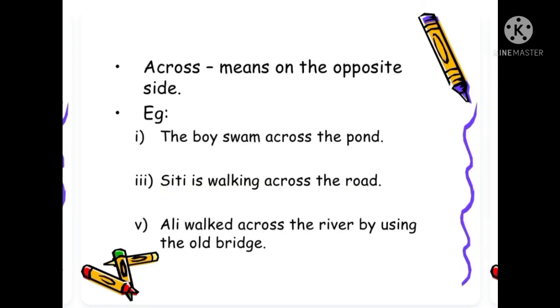Across means on the opposite side. Example: the boy swam across the pond. Siti is walking across the road. Ali walked across the river by using the old bridge.